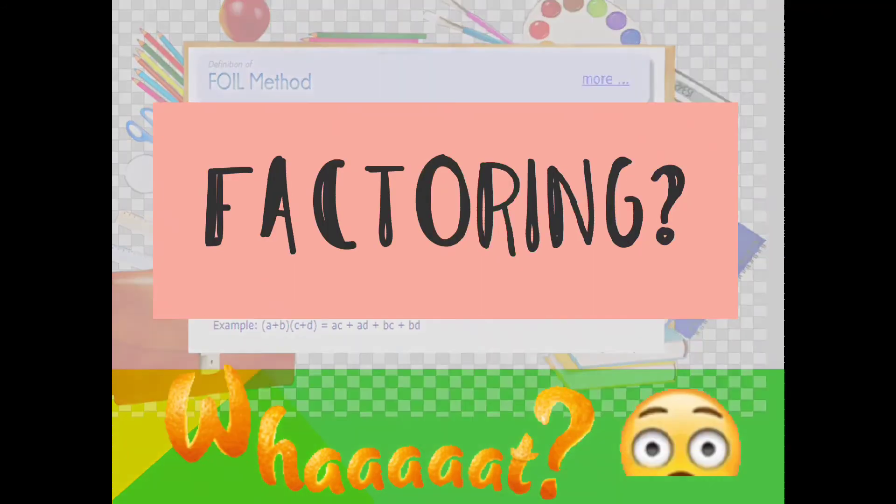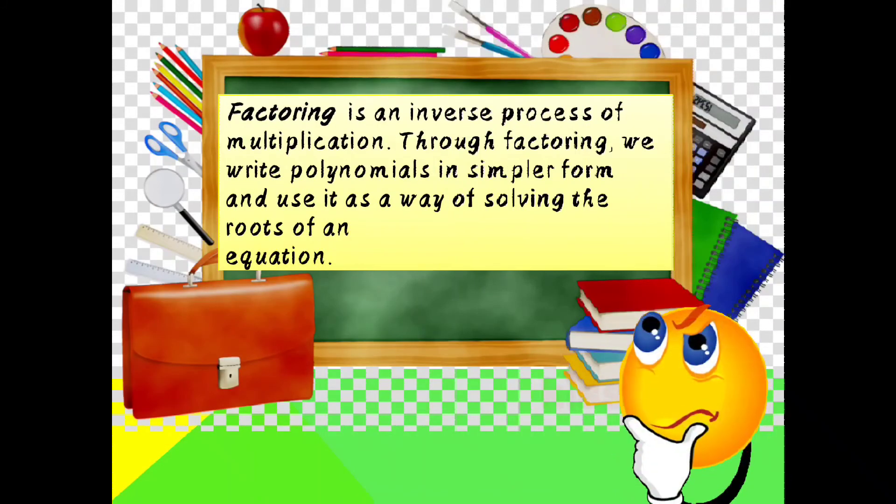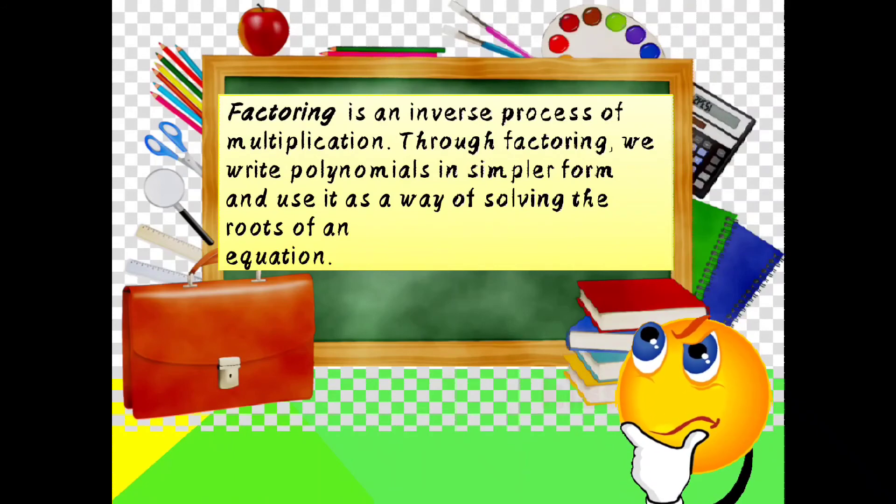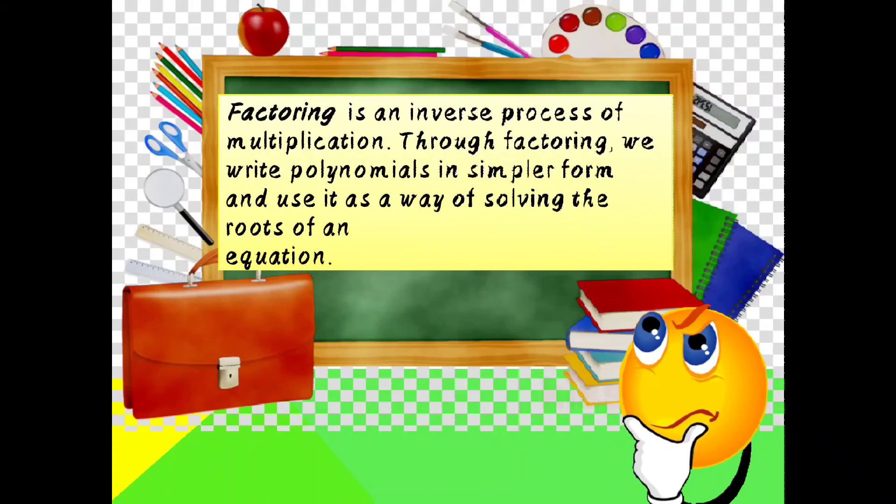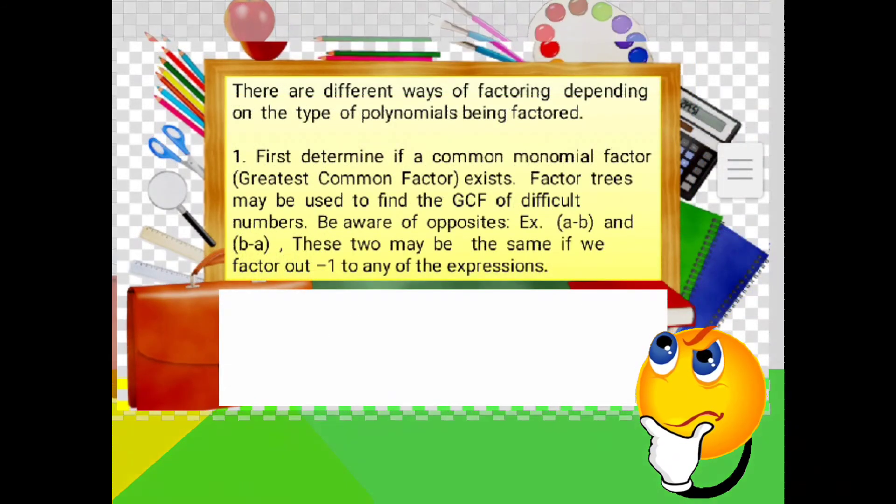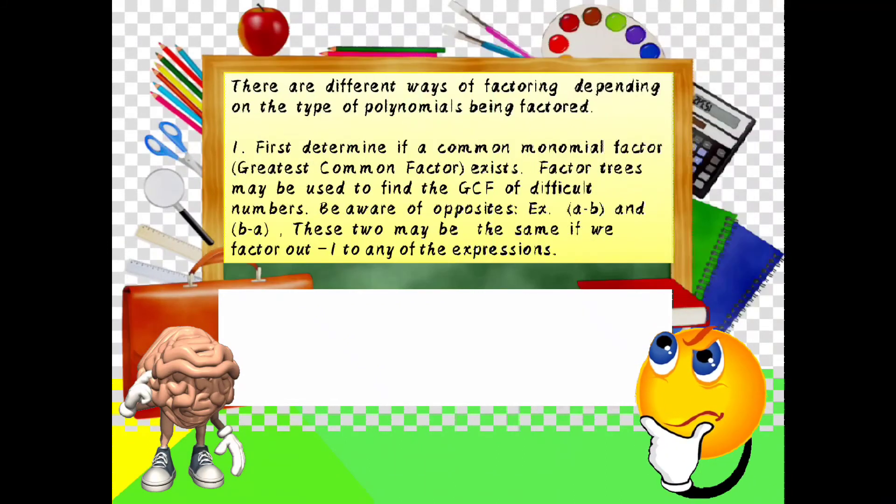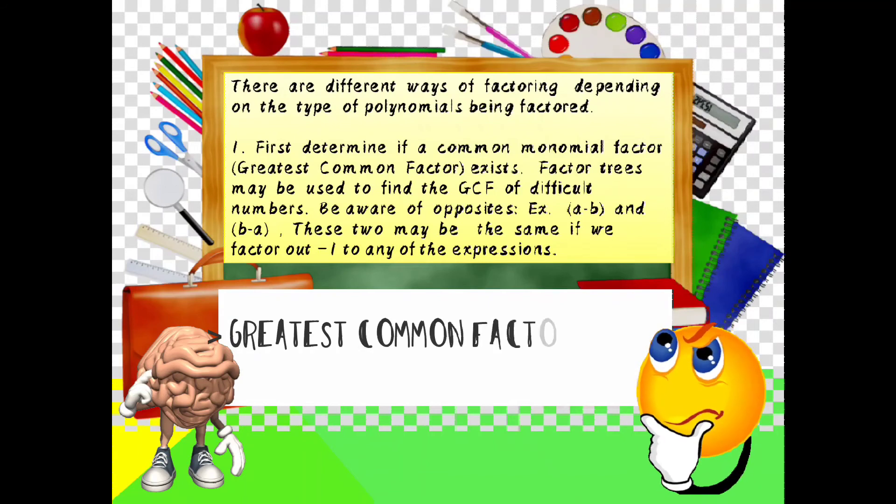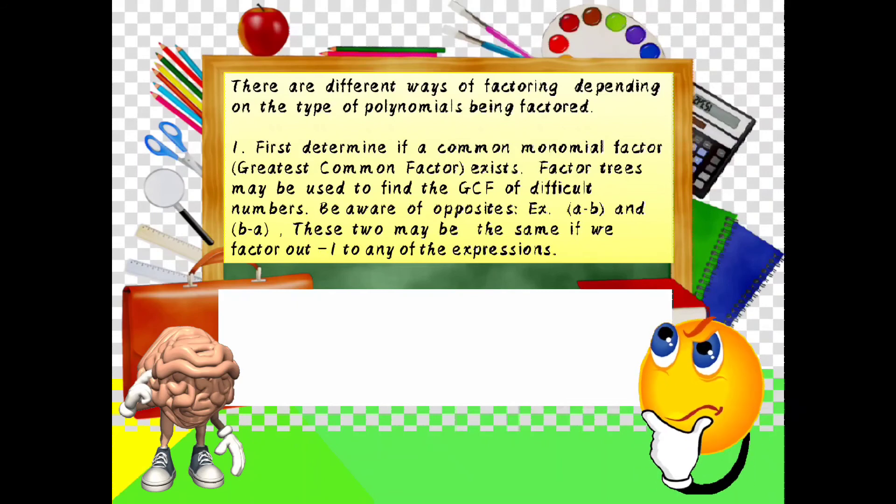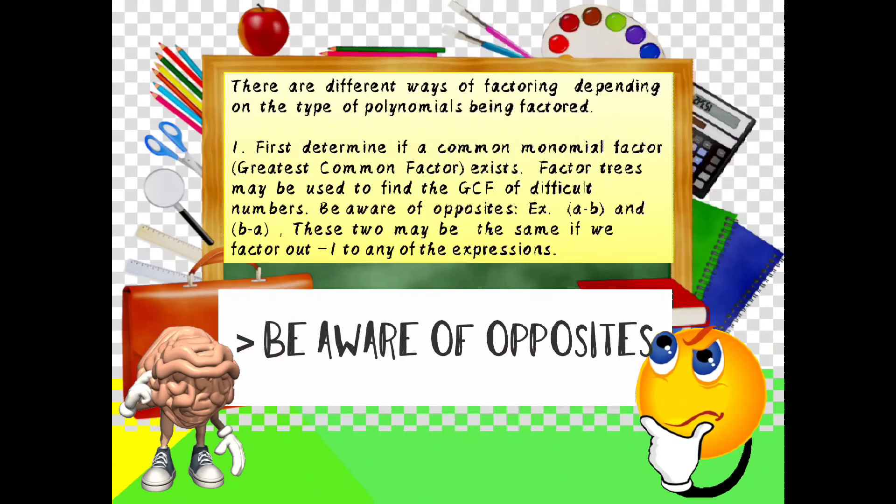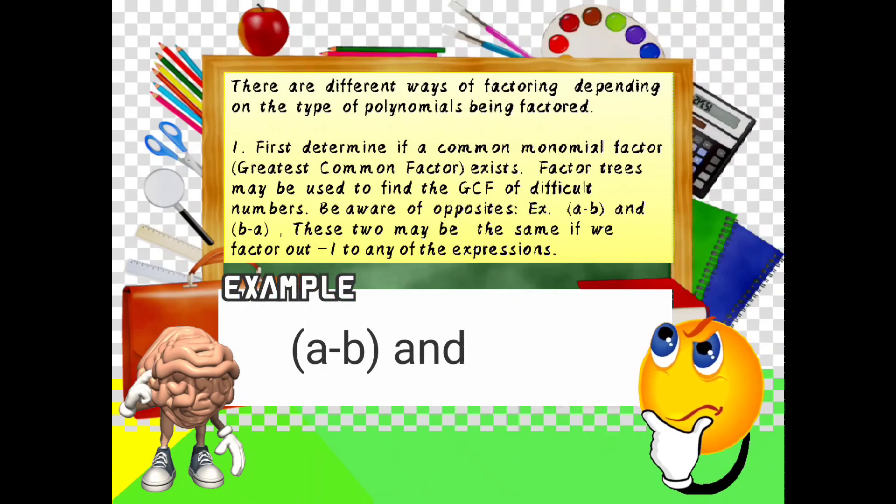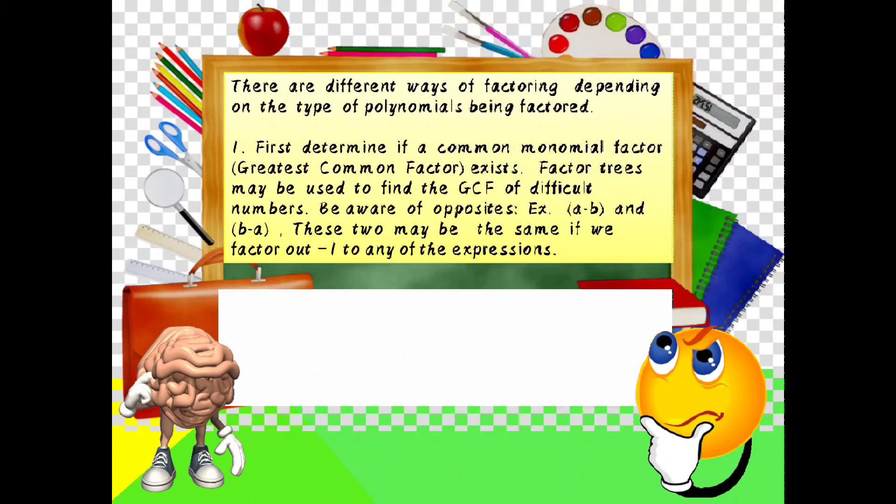What is factoring? Factoring is an inverse process of multiplication through factoring. We write polynomials in simpler form and use it as a way of solving the roots of an equation. There are different ways of factoring, depending on the types of polynomials factor. First, determine if a common monomial factor or the greatest common factor exists. Factoring trees may be used to find the GCF of difficult numbers. Be aware of opposites. Example, a minus b and b minus a. These two may be the same if we factored out negative 1 to any of the expressions.